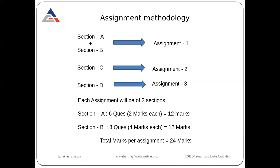Regarding assignments, you need to submit three assignments. The first assignment covers Sections A and B, the second covers Section C, and the third covers Section D. The pattern includes two sections: Section A with six questions of two marks each, and Section B with three questions of four marks each, totaling 24 marks per assignment. I want one assurance — please work on your own and submit original assignments.